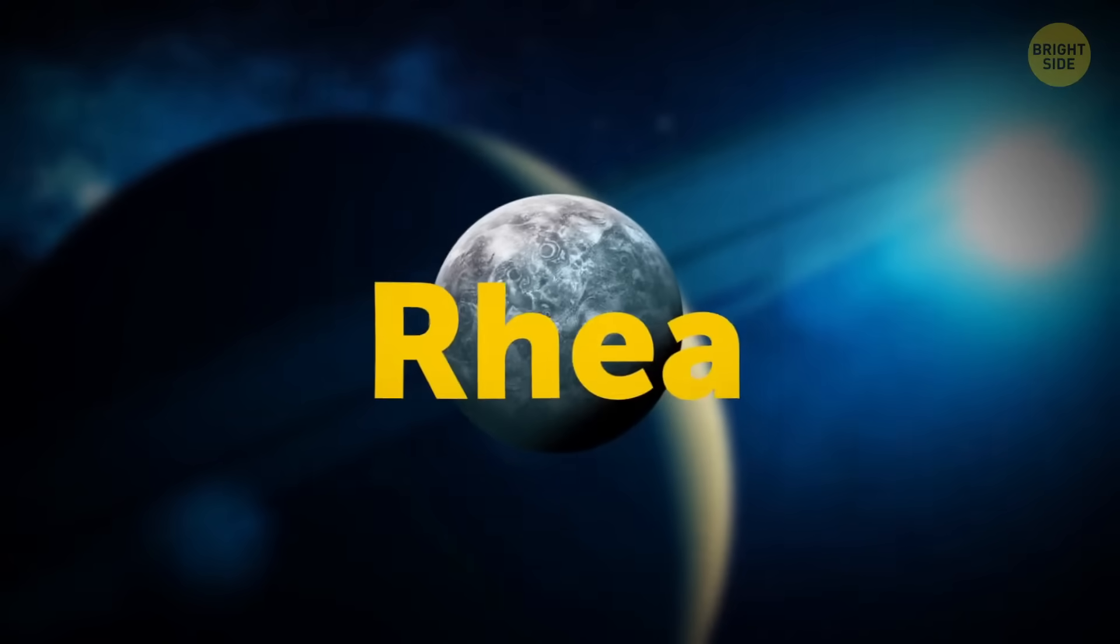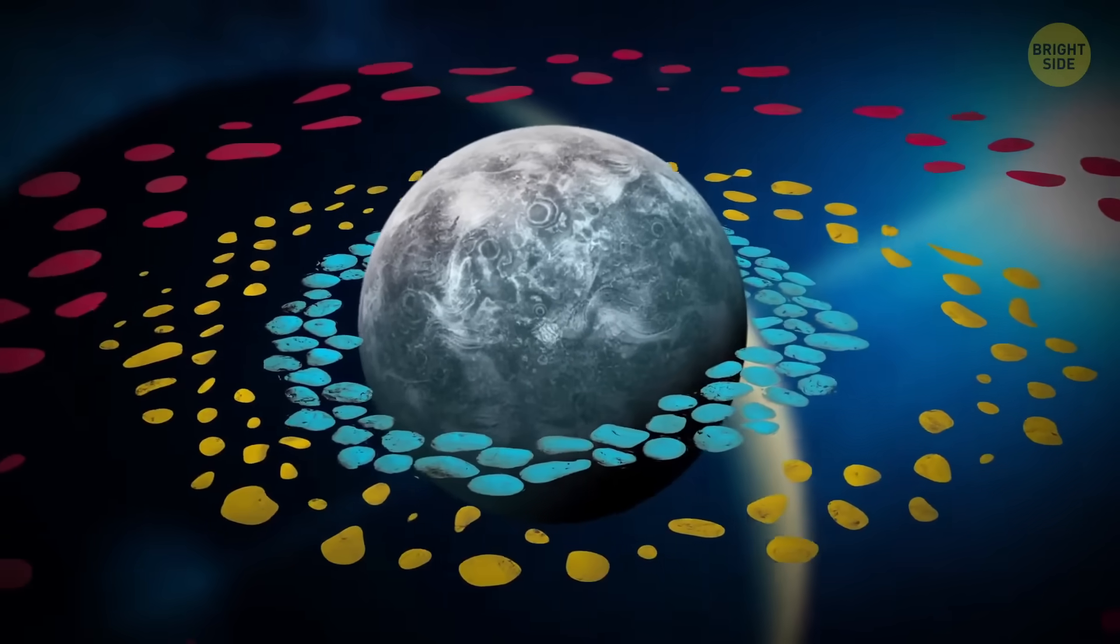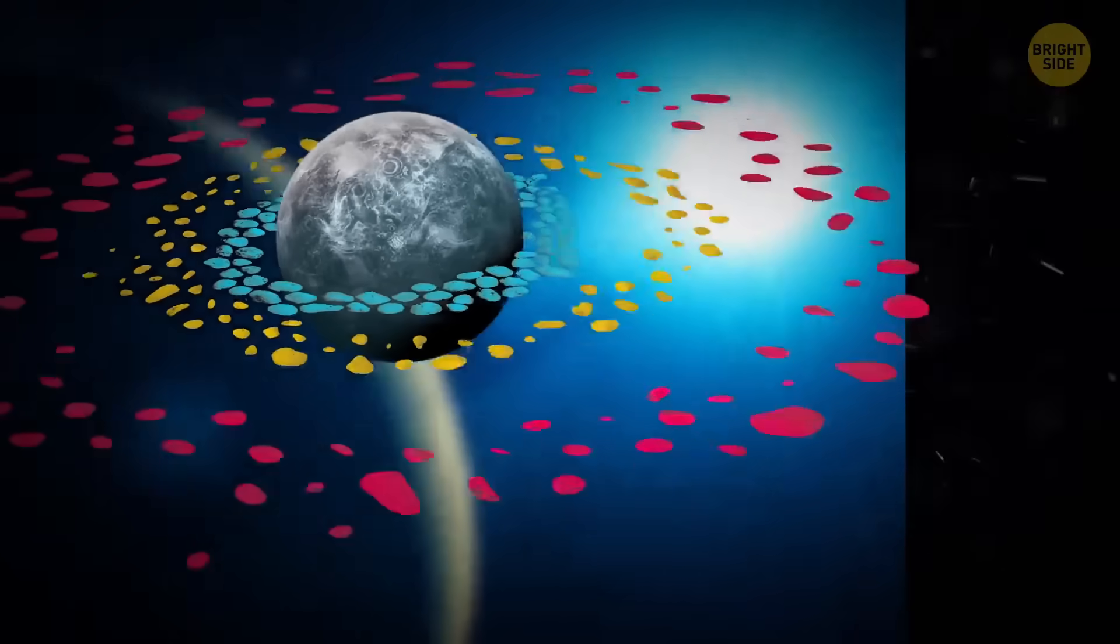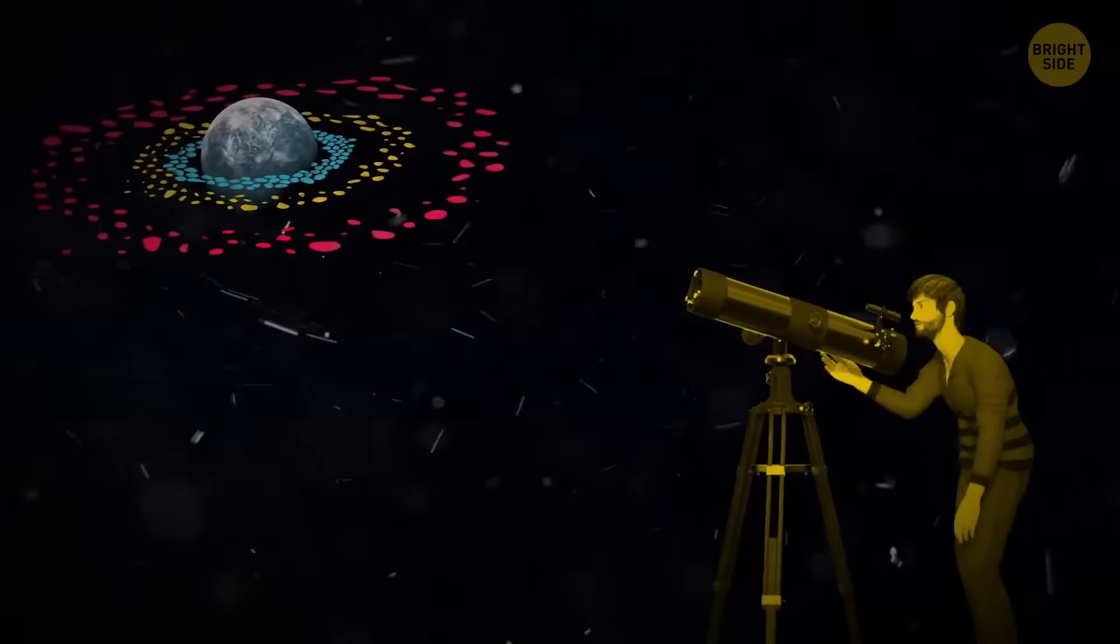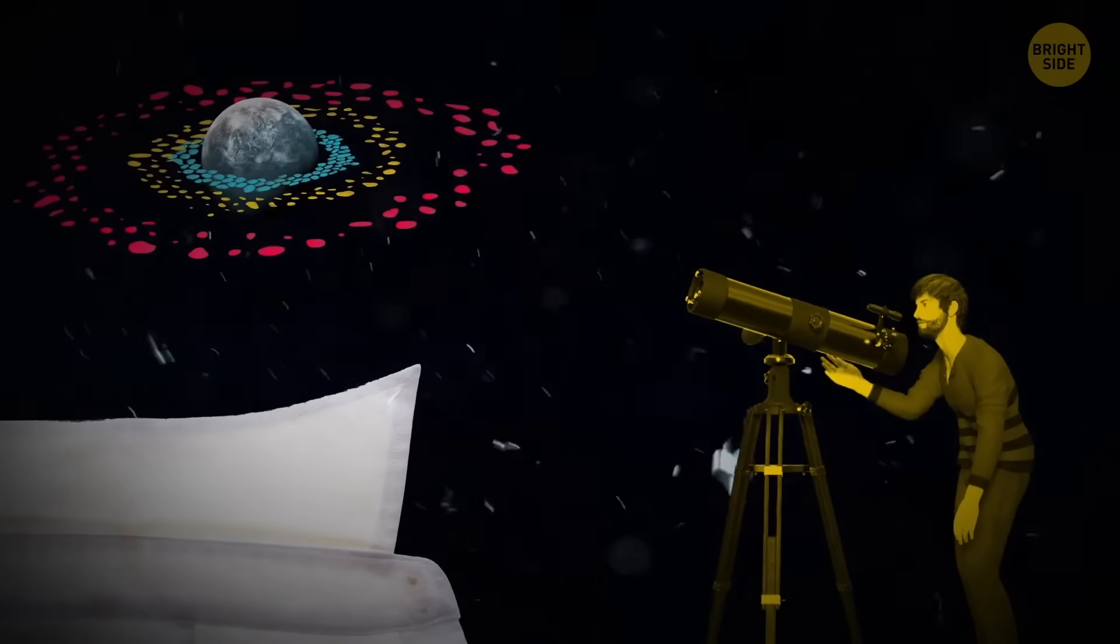One of the moons of Saturn, Rhea, might have a ring system consisting of three narrow bands. If astronomers manage to confirm it, it'll be the first time people discovered rings around a moon. Hey, that's nothing. I've had rings around my collar for years.